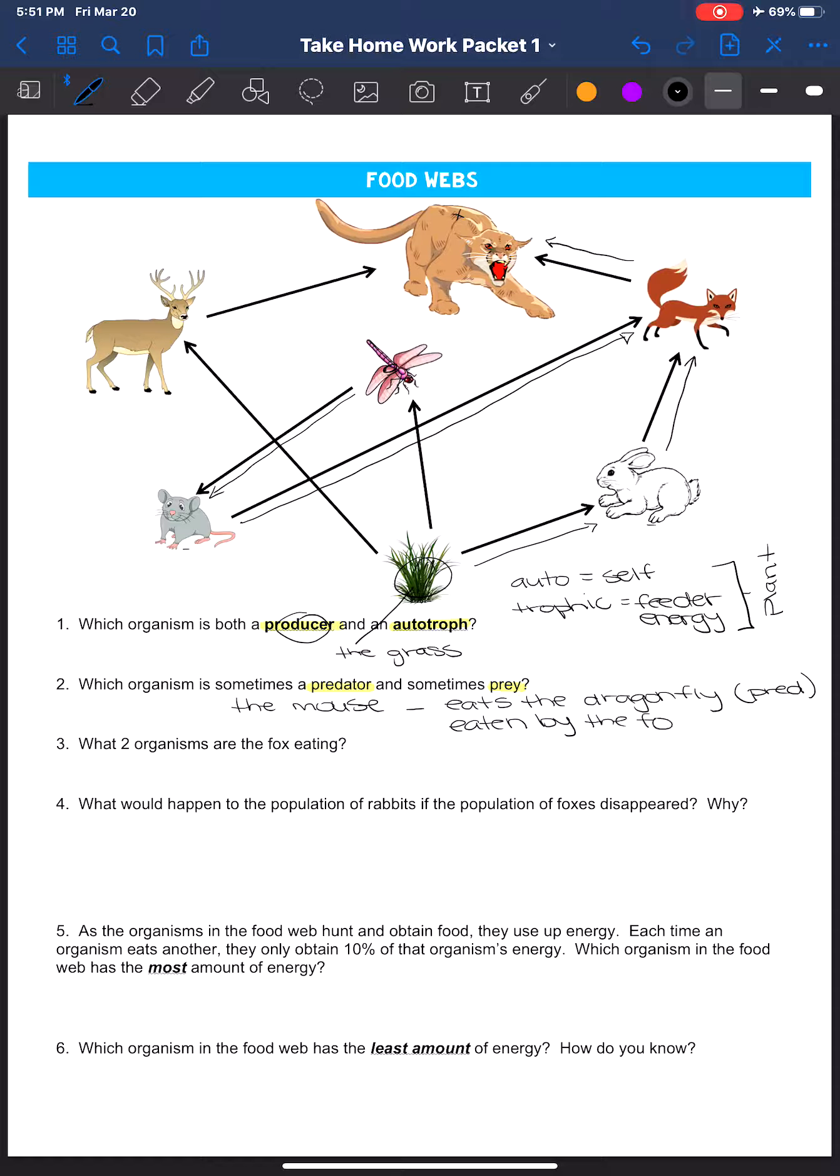Speaking of this little fox, which two organisms are the fox eating? What does the fox eat? The fox—if we're drawing our arrows, what feeds the fox? The arrows that are pointing towards the fox are going to come from this rabbit, and we're looking for another arrow that is pointing. So right here, the mouse also feeds the fox.